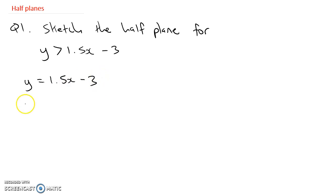The quickest way to graph it is just to find the x and y intercepts. To find the y intercept, we let x equals 0, so y equals minus 3.